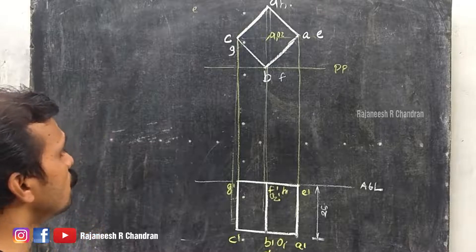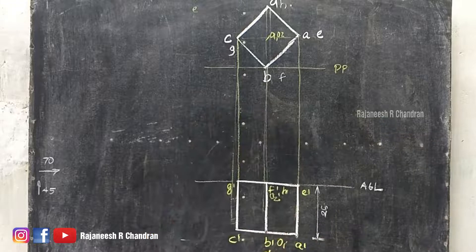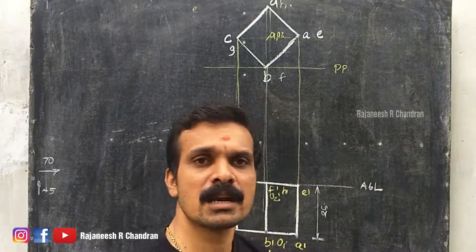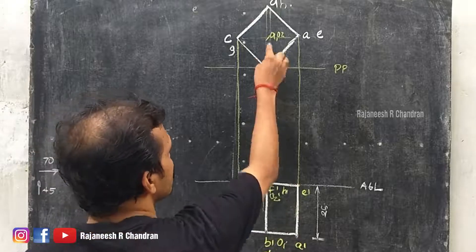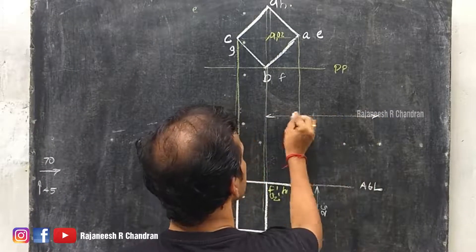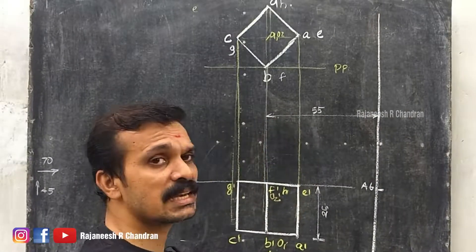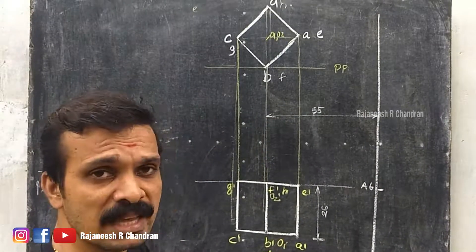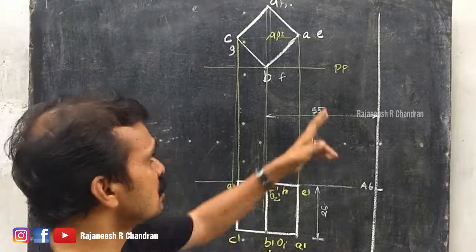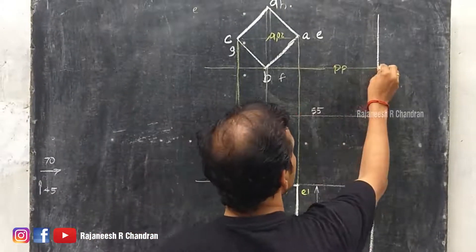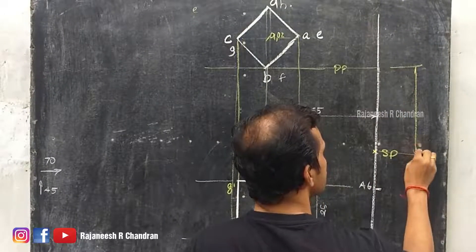Now, where is the central plane? It is given that the central plane is 55 mm to the right from the centre. So at the centre, draw a vertical line at a distance of 55 mm to the right — that line represents the central plane. The station point is 70 mm in front of the picture plane, so mark SP at 70 mm in front of the picture plane.